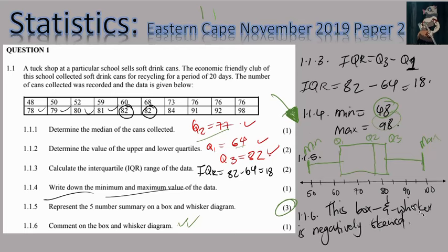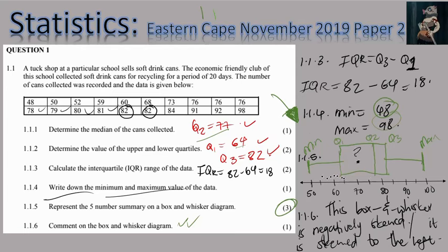If you don't want to say negatively skewed, you can say it is skewed to the left. The reason is that on the left part of the diagram there is a lot of space, showing that more values fall on the left side as opposed to the right side near Q3. So it is negatively skewed, or skewed to the left.